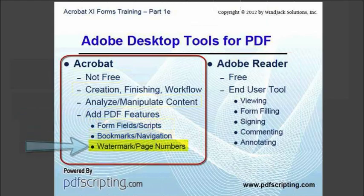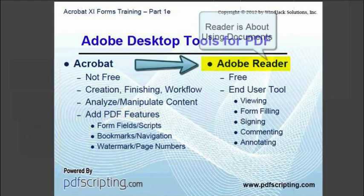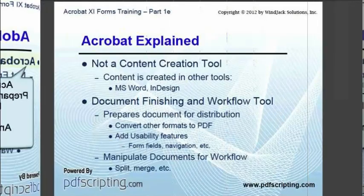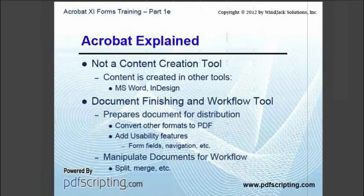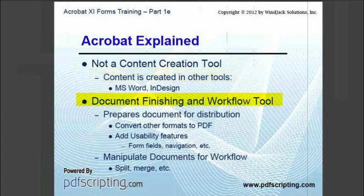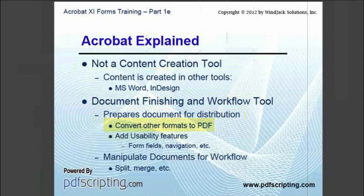Acrobat also supports bookmarks, navigation and accessibility features, watermarks, page numbers, and a huge number of other document preparation features. So Reader allows users to view and use documents, whereas Acrobat is for creating, preparing, and processing documents. While Acrobat creates PDF files, it is not a tool for creating document content. Content is created in a tool such as Microsoft Word or Adobe InDesign. Acrobat is the tool you use to prepare the document for distribution by converting the creation format into a PDF and then adding form fields, navigation, and other usability features.